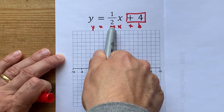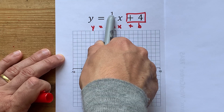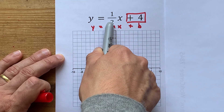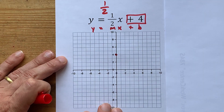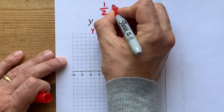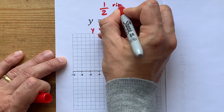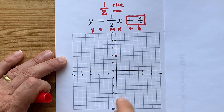Then, our slope, m, is 1 over 2. It's already written as a fraction for us. Slope is, by definition, rise over run.